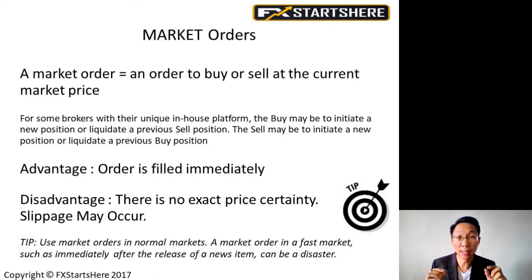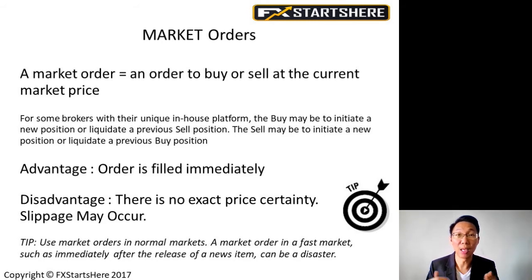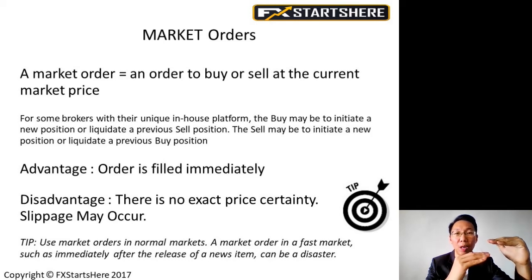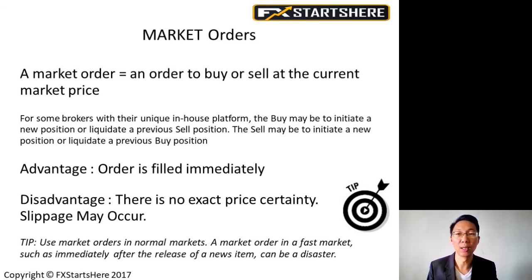The disadvantage is there is no exact price certainty — slippage may occur. But this doesn't happen often. Most of the time when you click buy or sell, you will be entered into the trade at that exact price. However, there might be certain situations, especially during news releases where the price is fluctuating a lot and moving very fast. When you click buy or sell at that point, there might be slippage — meaning you intended to buy at one price, but the price moved so fast that you end up buying at a different price. This is basically the only disadvantage of market orders, but 90% of the time you will be quite safe.